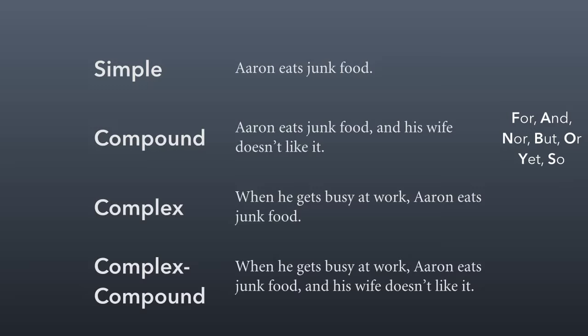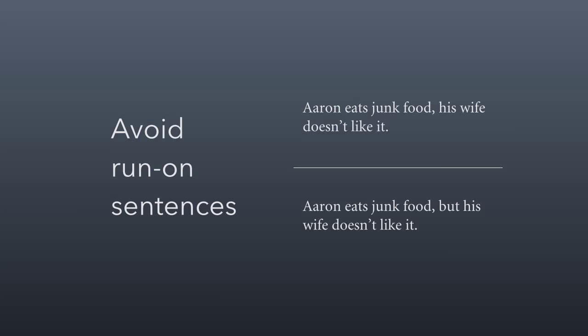That brings us to our next tip: as you write, make sure you avoid run-on sentences. This is where you have independent clauses that are improperly joined. For example, 'Aaron eats junk food, his wife doesn't like it' is a run-on sentence — specifically a comma splice, where you're joining independent clauses with just a comma. You should always have a comma followed by one of the FANBOYS words to properly join independent clauses.